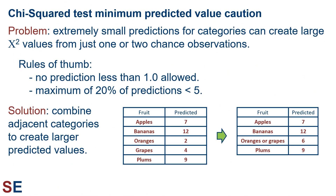Before we finish, there are a few things about chi-squared tests to be aware of. Predicted values that are too small is a problem that comes up sometimes. Extremely small predictions for categories can generate large chi-squared values from just one or two chance observations. Technically, at this point the continuous chi-squared distribution doesn't match our discrete scenario appropriately. There are therefore a couple of rules of thumb: no prediction less than 1 is allowed, and a maximum of 20% of the predictions can be less than 5. To solve this issue, we can combine adjacent categories to create larger predicted values. In the example shown, we wouldn't want to do a chi-squared with these predictions because the predicted values for the oranges and grapes categories are too small — we can fix this by combining them to create a larger category of oranges or grapes.